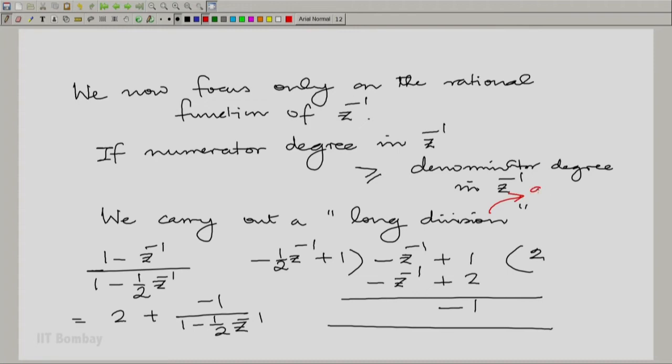So, essentially after long division, you would get a quotient and remainder. It gives you a quotient which would essentially be a finite series in Z inverse, and it would leave you with a remainder which we keep in the numerator.